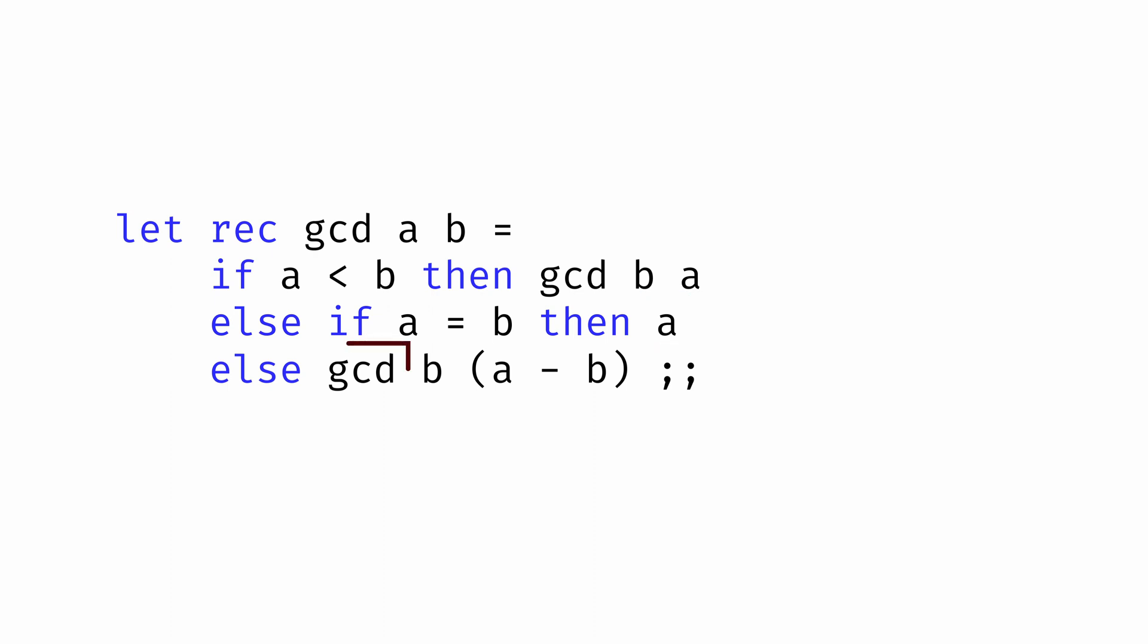But if they're not equal, then we'll call the function again. But this time, take the greatest common divisor of b and a minus b, effectively subtracting off that b by b square tile, and taking the greatest common divisor of what remains. This function will work, but let's see if we can improve on it further.